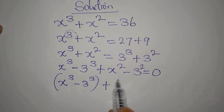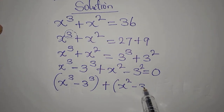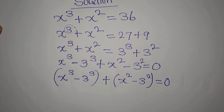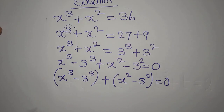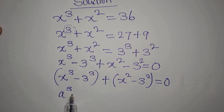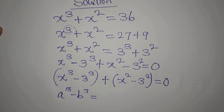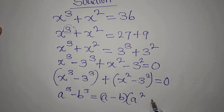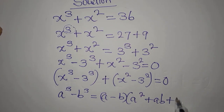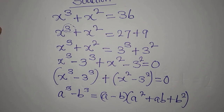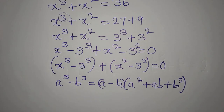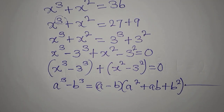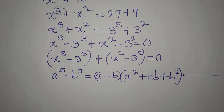We deal with x³ minus 3³ separately and x² minus 3² separately. Here we have difference of two cubes, and here difference of two squares. For a³ minus b³, this gives us (a minus b)(a² plus ab plus b²). Remembering these formulas is the most difficult part of solving this type of problem.